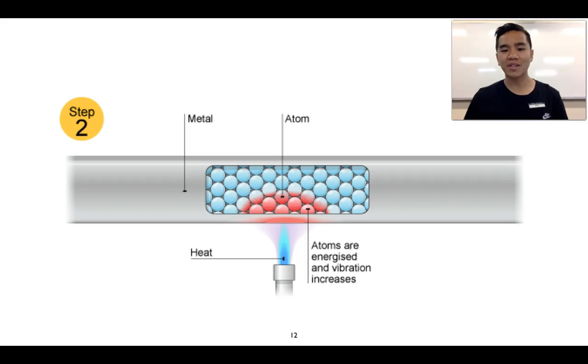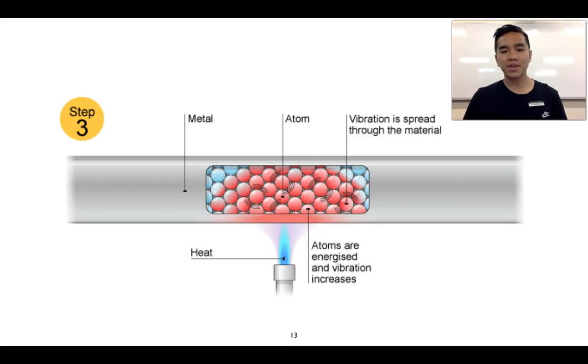So in contrast, a poor conductor would not allow for the transfer of energy and the transfer of kinetic energy as well as something like a metal. So we wouldn't expect this to happen at a similar rate. It can still happen, but maybe not as quickly.